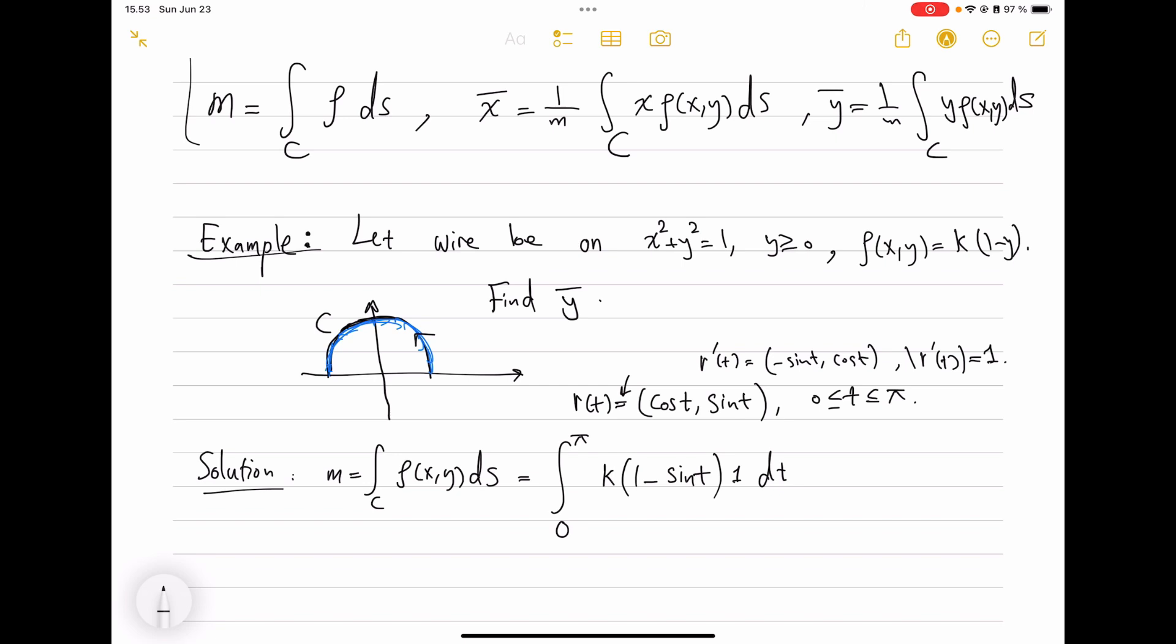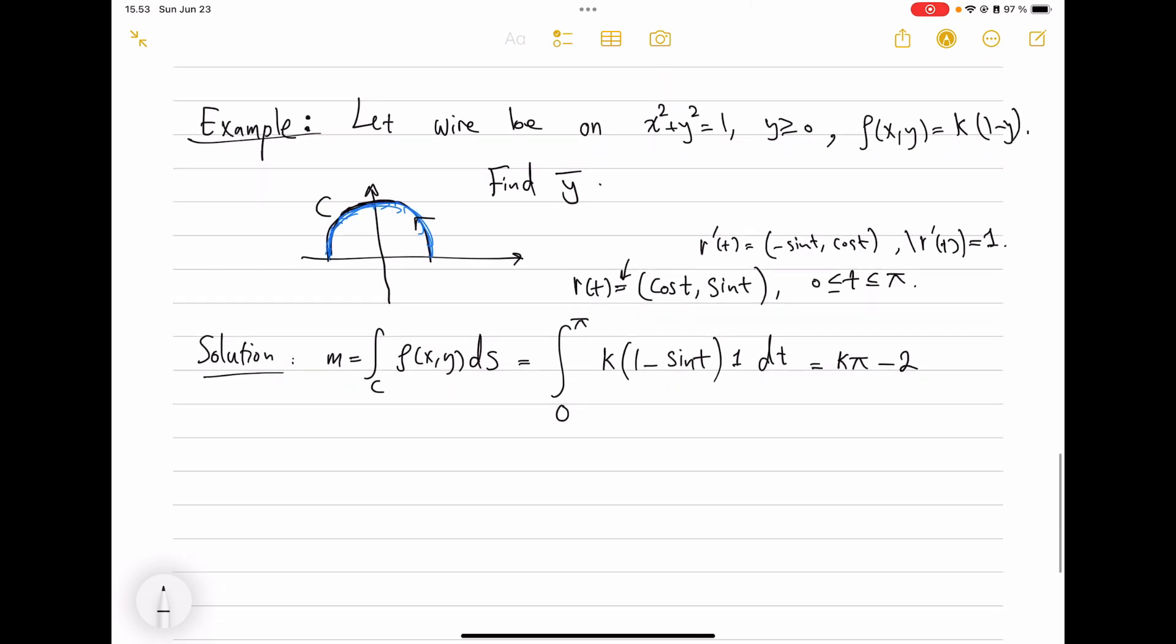So r'(t) is (-sin t, cos t), and its length is equal to one. This is actually arc length parameterization—that is why this is the go-to parameterization for circles. So that would be 1·dt, and from this you will get some number that depends on k. I think... so πk. k times π will be that, minus this will be cosine, so minus 2, I believe.